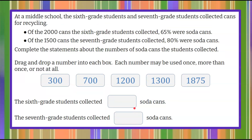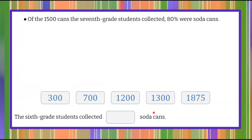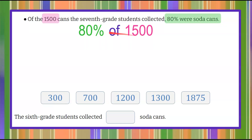Let's move on and put this back into our main question — we have one more part to do. We now want to understand how many of the collected cans for the 7th graders were soda cans. So we have 1,500 cans, and 80% of them were soda cans. So we're finding 80% of the 1,500 total cans.